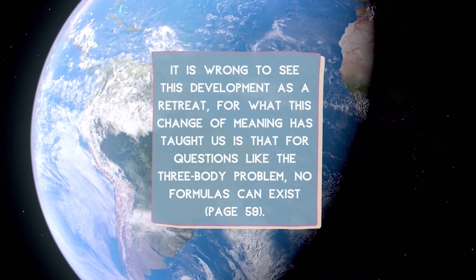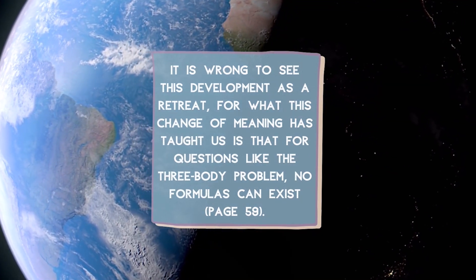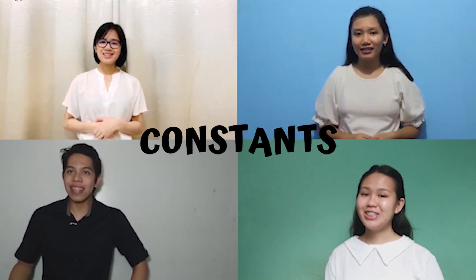It is wrong to see this development as a retreat. For what this change of meaning has taught us is that for questions like the three-body problem, no formulas can exist — but there's always a way to solve it. Overall, Ian Stewart's book Nature's Numbers is filled with useful information as well as new perspectives on the use of mathematics in nature. Stewart expounded the concepts of constants of change through differential equations and their relation to change. Furthermore, he illustrated how the meaning of 'solve' changed over time with the introduction of new constants through the passing of years. Ian Stewart provides an understanding of nature that does not only rely on mathematical processes, but an understanding of nature's patterns using qualitative descriptions. And with that, we can truly say that constants generate change.